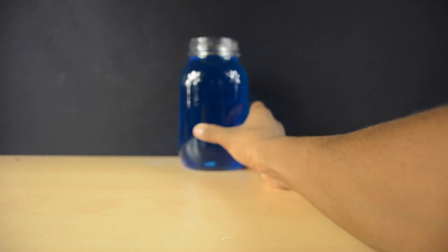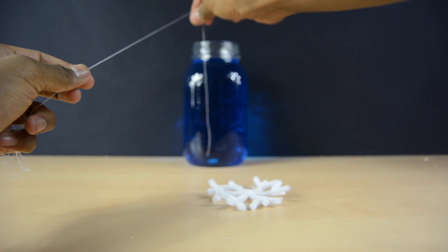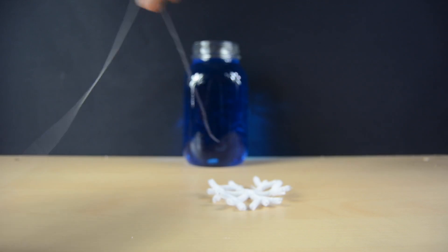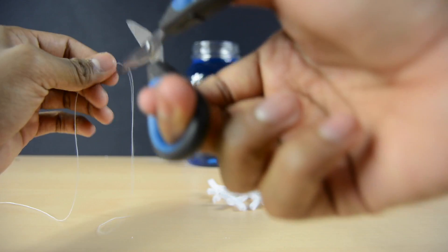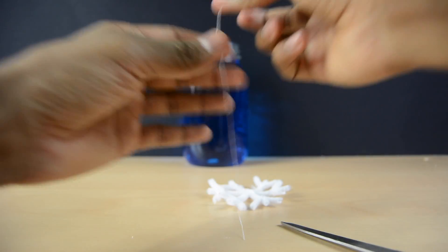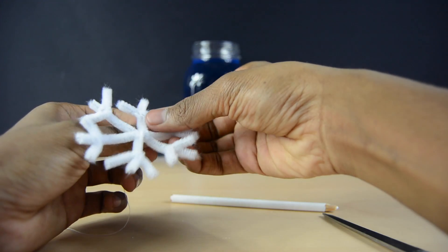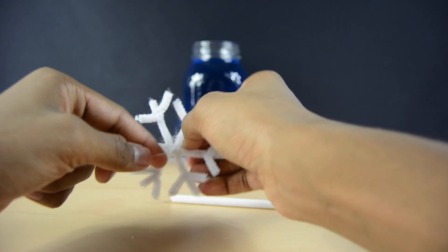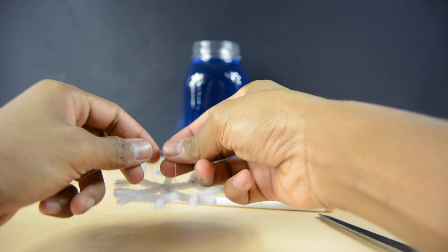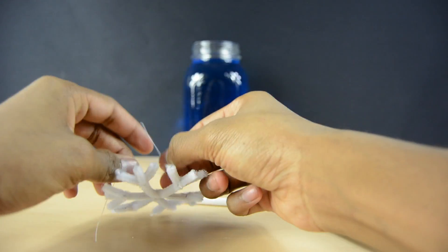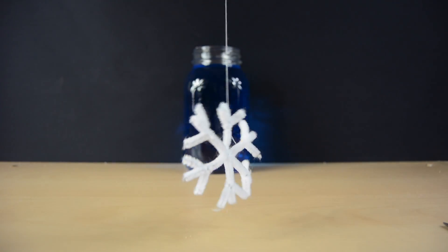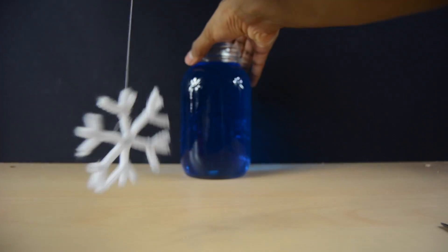Now for the final step, you just have to go ahead and set this solution to the side and tie your snowflake to a pencil. This kind of took me a long time so you're gonna have patience unless you're really good at tying small knots.